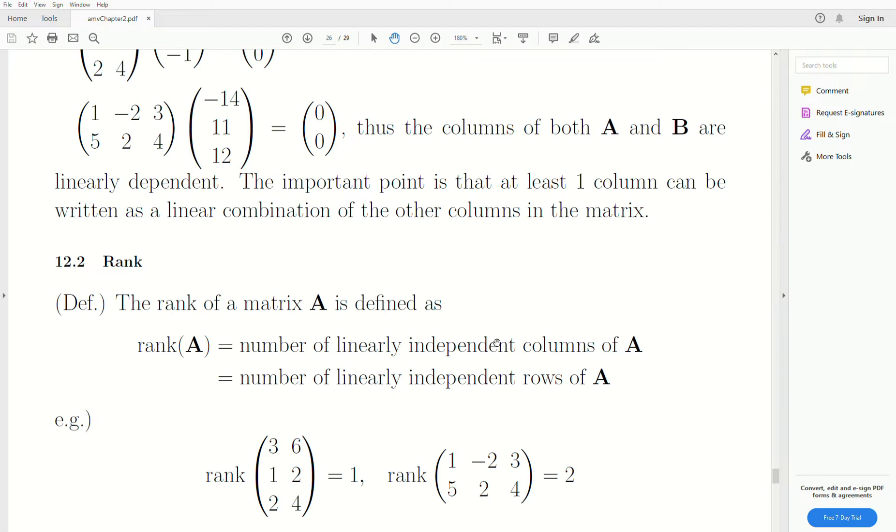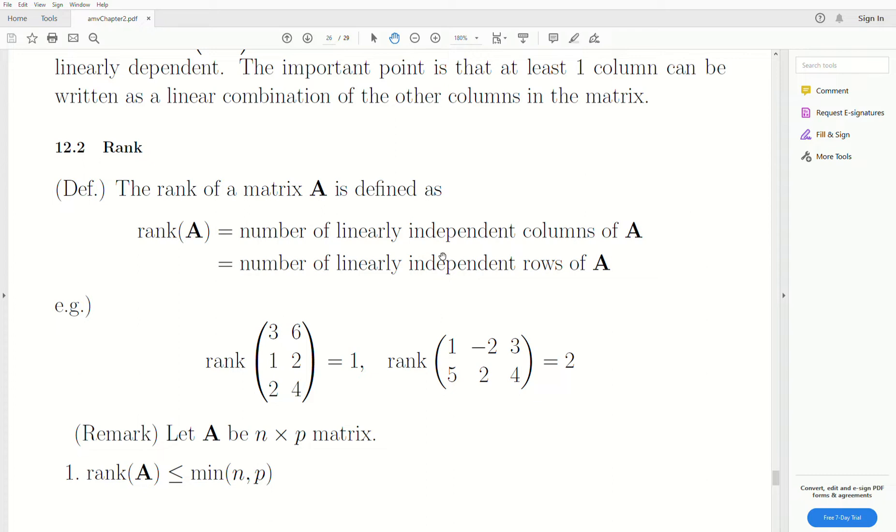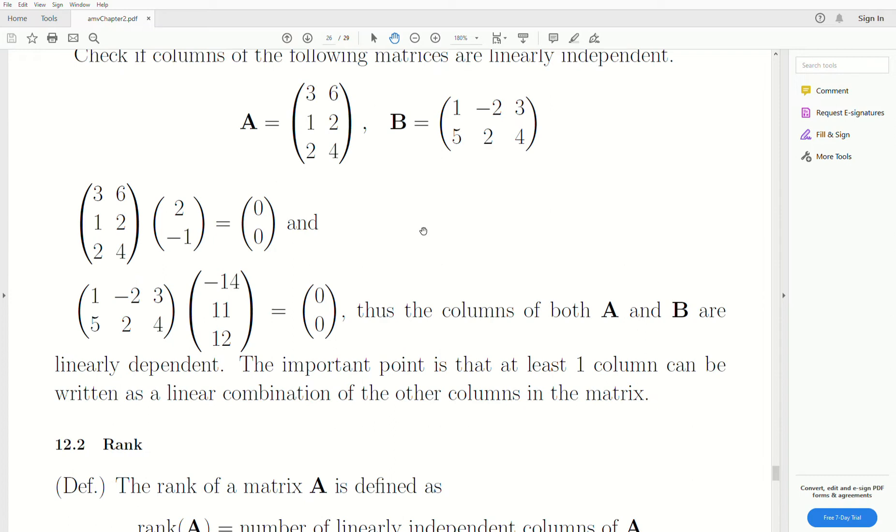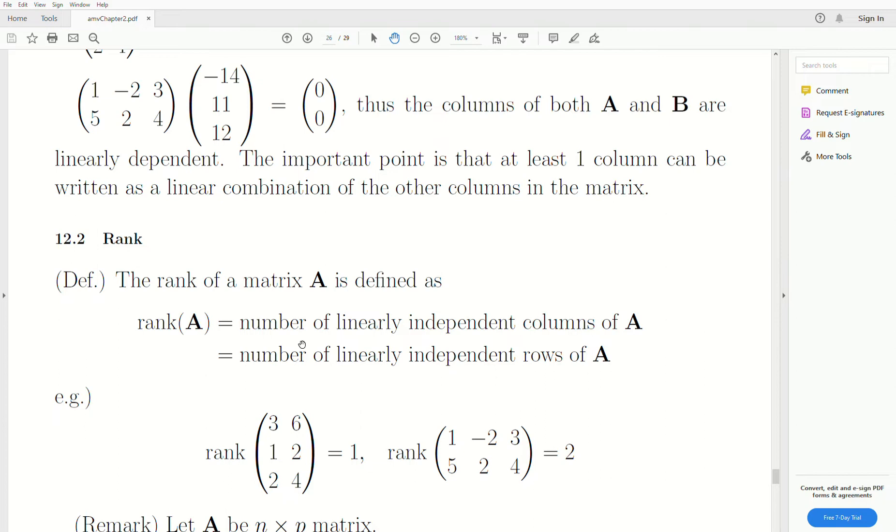Now the rank of a matrix is defined as the number of linearly independent columns of A, or it's the number of linearly independent rows. It actually, that's the same, ends up being the same number. Even though the matrix is not square, this is two by three, three by two, but the number of independent rows and number of independent columns is the same.